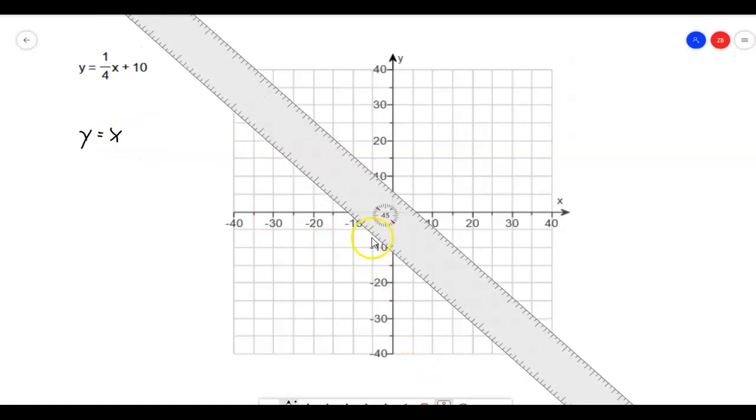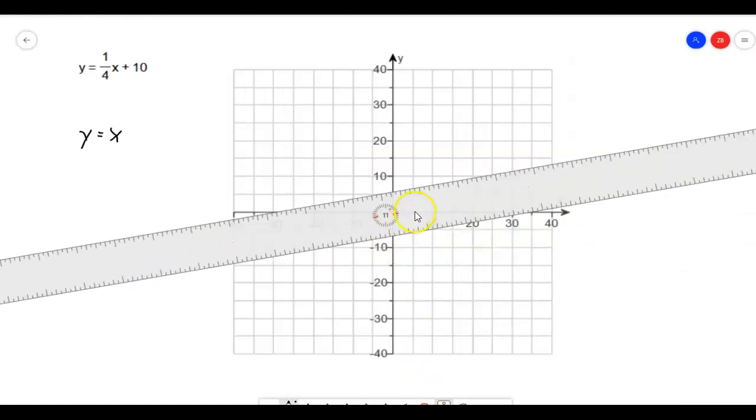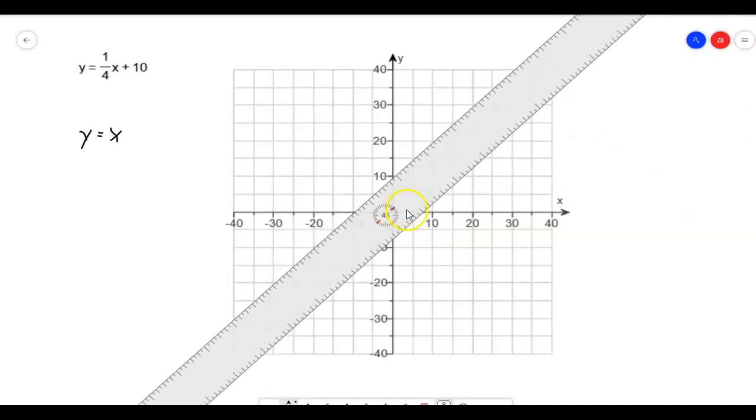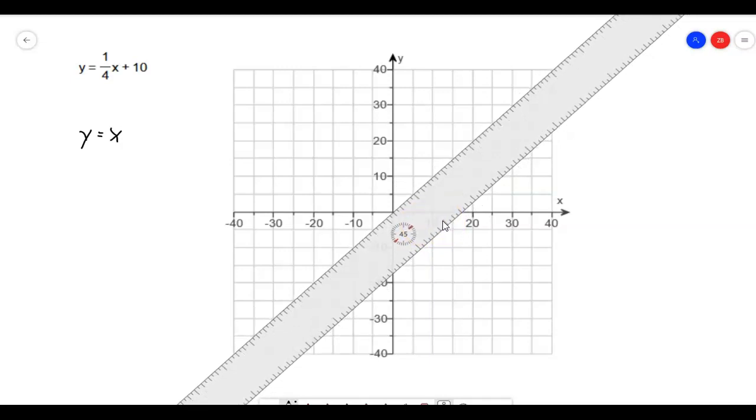So if I do y equals x, that's just going to be a 45 degree line that goes through—let me set that up here. It's going to go right through the origin, and it will look something like this. All right,